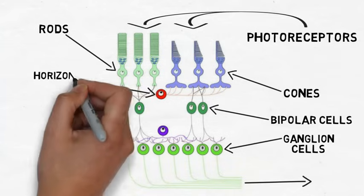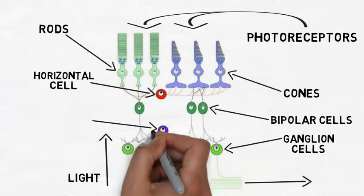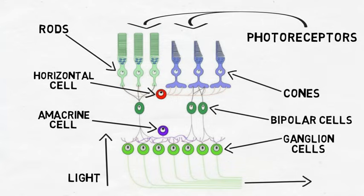There are two other cell types in the retina that should be mentioned, horizontal and amacrine cells. Horizontal cells receive input from multiple photoreceptor cells. They integrate signaling from different populations of photoreceptor cells, make adjustments to the signals that will be sent to bipolar cells, and regulate activity in photoreceptor cells themselves.